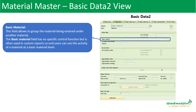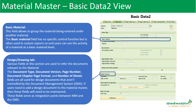Coming to the Basic Data 2 view, there is a field called basic material, which allows you to group the material being entered under another material. It is just to group materials and is used for some customization reports — it doesn't have any major specific control functions. Then we have a design drawing tab, with various fields like document type, document version, page number, etc. Any material which has documents like drawings or other specific details — those documents can be attached to the Material Master through this tab. These fields serve as an integration point between MM and DMS, the Document Management System.